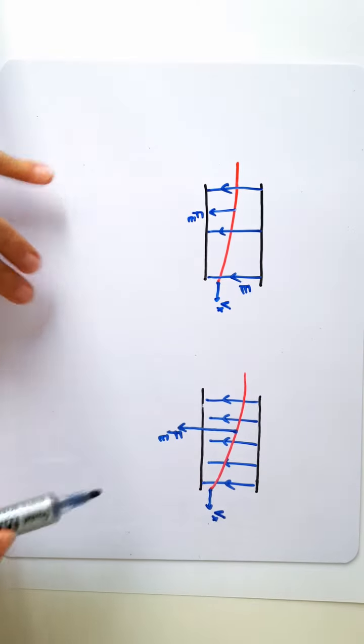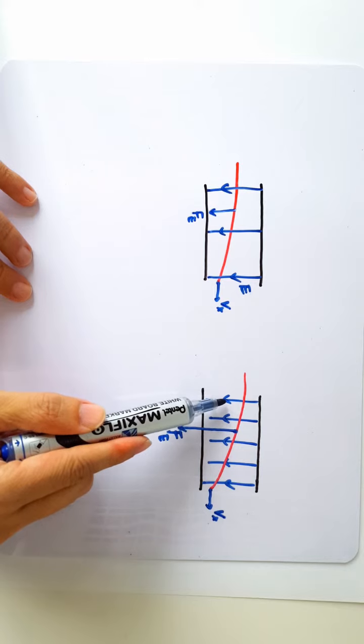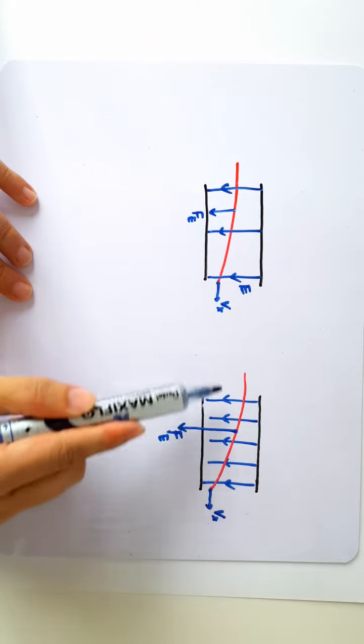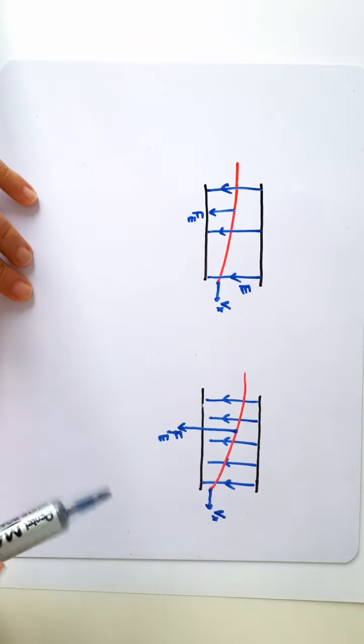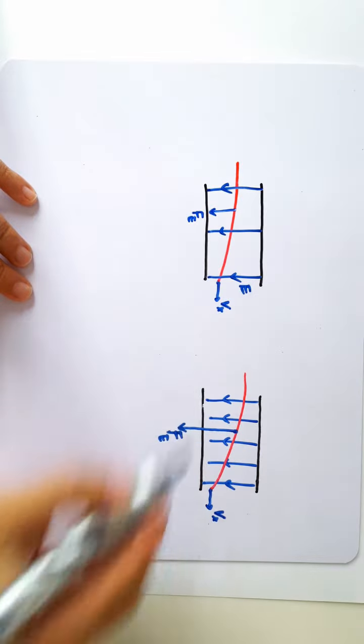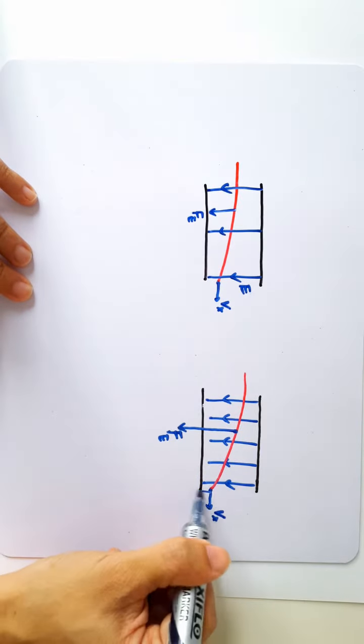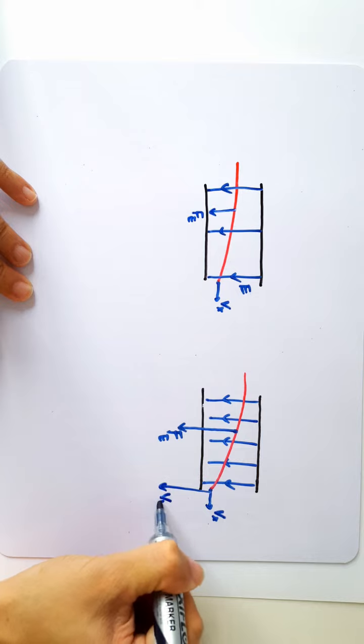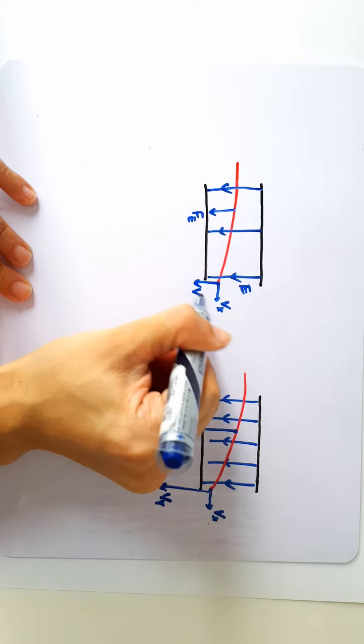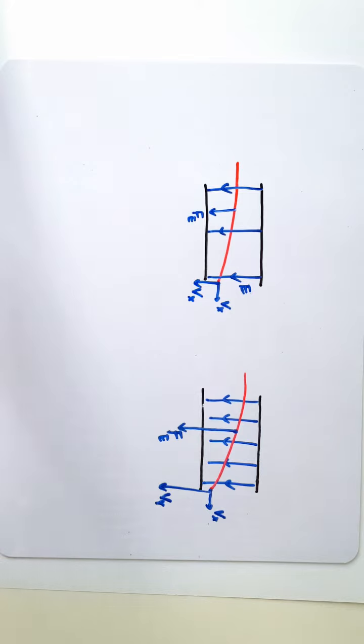As far as the horizontal motion is concerned, it's constant speed motion that's not affected by the electric field. But the vertical velocity will be larger for this case compared to this, simply because the field is stronger for this case.